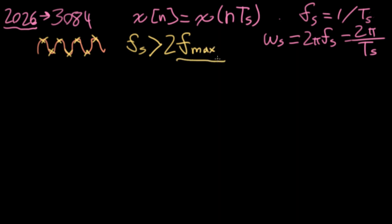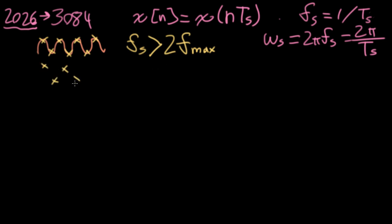The idea is that you might have some other sinusoids present, but as long as they're of a lower frequency than whatever the maximum frequency of your signal is, and you sample more than twice that — and technically it does need to be a strict inequality — then if you have the samples, you can reconstruct the original signal just from those samples. And that's a really remarkable result.